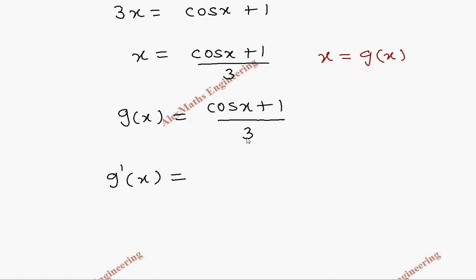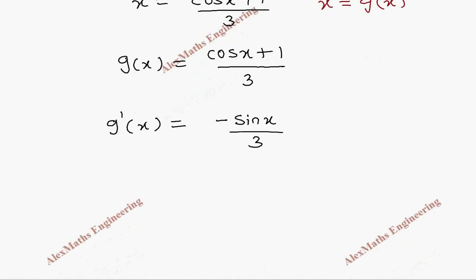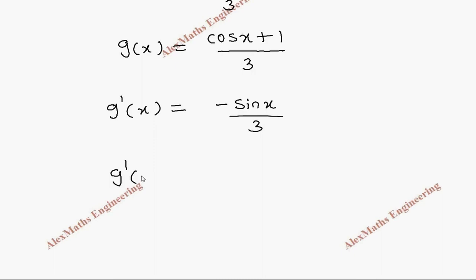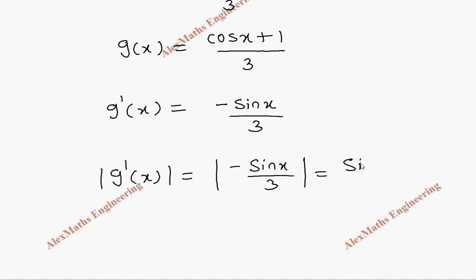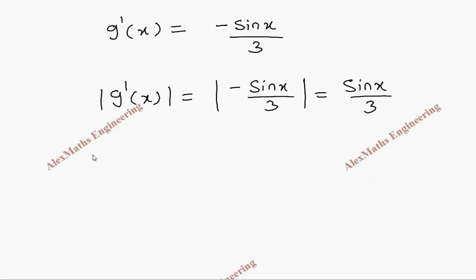We have to evaluate its derivative g'(x). Since 3 is a constant, we follow differentiation of the numerator, which gives minus sin x, over the denominator 3. So the magnitude of g'(x) is |(-sin x) / 3|. By taking modulus it becomes positive. Now, since the root lies between 0 and 1, let's find the modulus of g'(0): that is sin 0 / 3, which is 0.